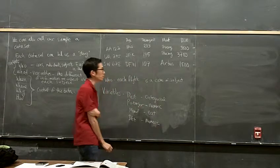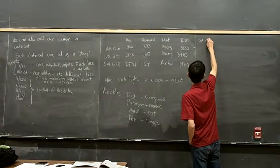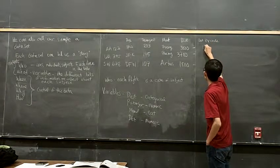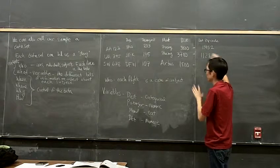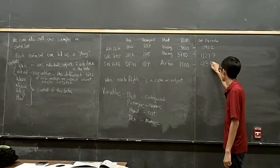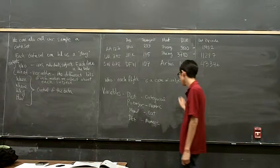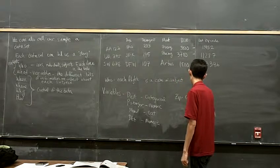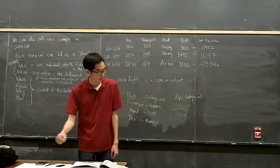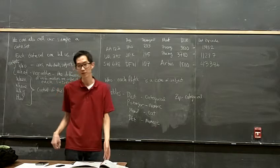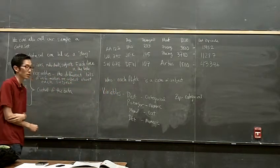What if I include another variable and say destination zip code? Let's say this is 13452, this is 11287, this is 43346. Zip code would be categorical — they're numbers, but they don't tell us how much or how many. They put us into a category; they tell us which type, or where. It doesn't make sense to say this flight has 30,000 more zip code.